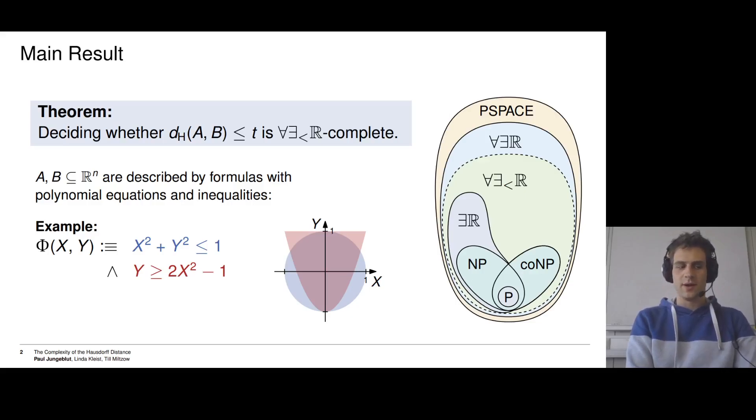So in this case, the described set is all x, y in ℝ² such that φ(x, y) is true, which is this green region.